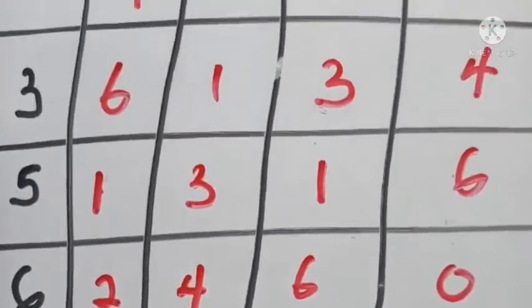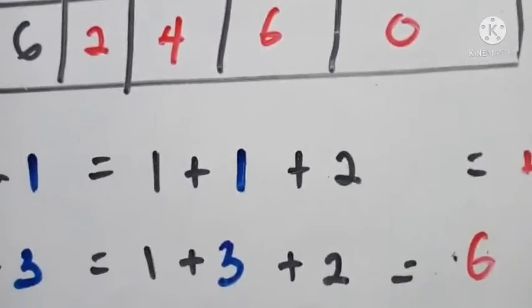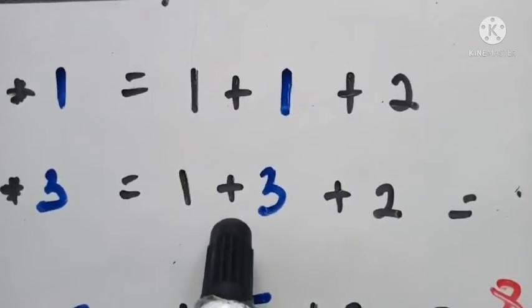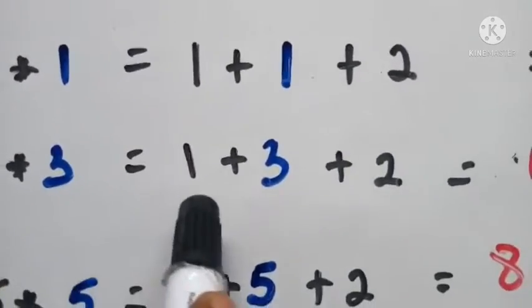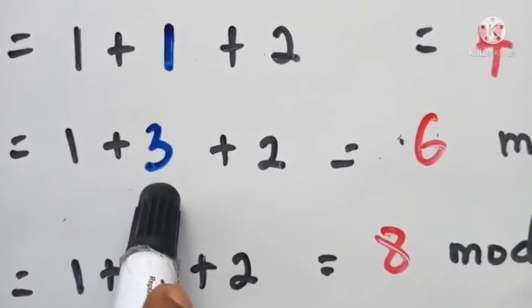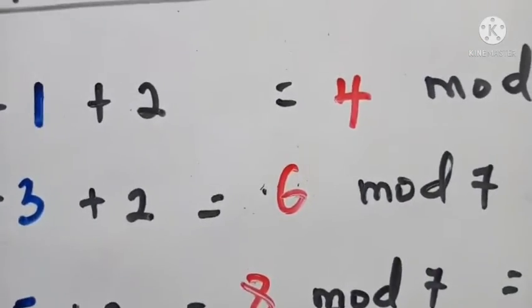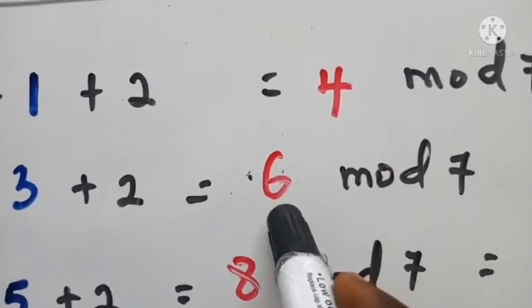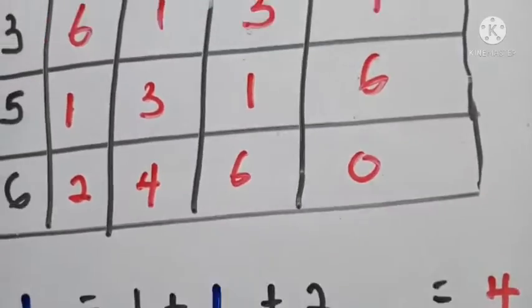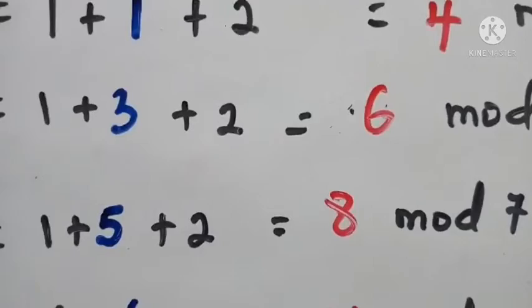For the next part, consider 1 ★ 3. We combine them: first person (1) plus second person (3) plus two. So 1 + 3 + 2 = 6. This is still not up to seven, so they take everything as it is. The answer is 6.